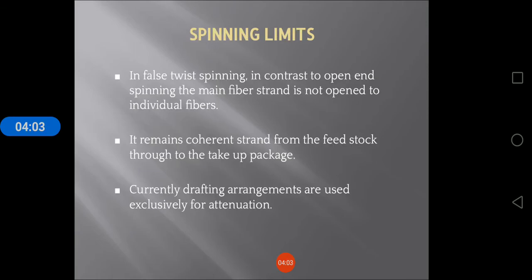Spinning limits in false twist spinning: In contrast to open-end spinning, the main fiber strand is not opened to individual fibers. It remains a coherent strand from the feedstock through to the take-up package. Currently drafting arrangements are used exclusively for attenuation.